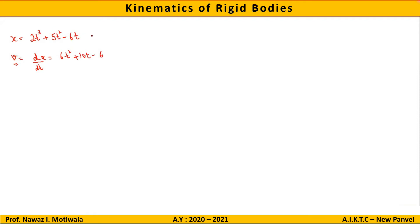Now, for acceleration, we know that it is the derivative or the rate of change of velocity with respect to time. So if I differentiate the velocity equation, I will get 12t + 10. Please understand this — this is a very basic and important thing for understanding the concept of motion curves.